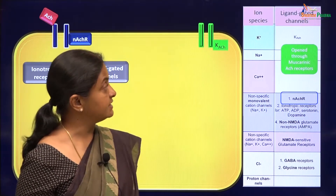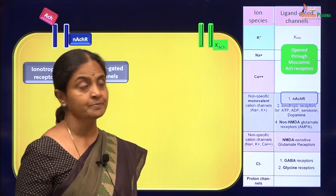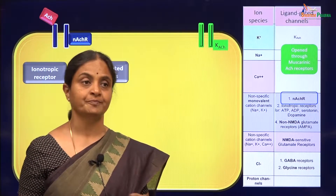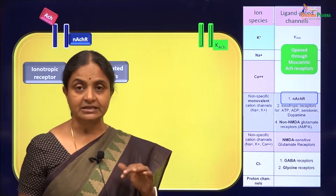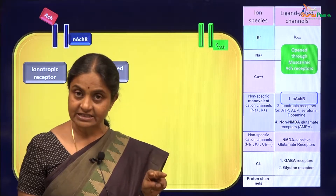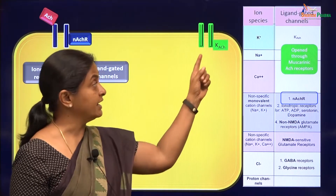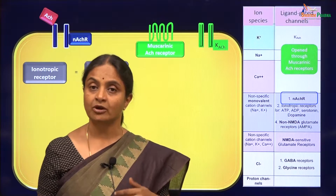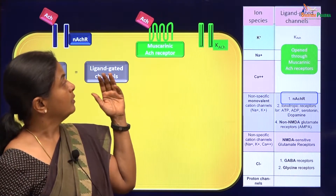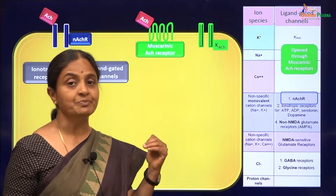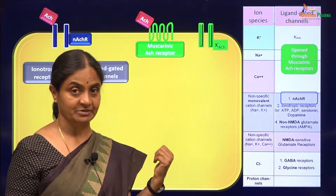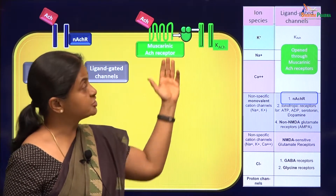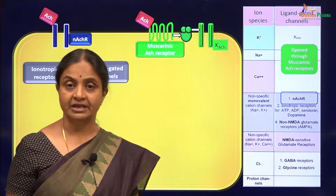Now we will look at the KACH channel. This channel is normally closed. The best location to study it is on the membrane of the pacemaker, the sinoatrial node. The pacemaker is innervated by the vagus nerve, and the vagus nerve releases acetylcholine. Acetylcholine does not directly bind to the KACH channel; instead it binds to what are called muscarinic receptors on the pacemaker cell. The muscarinic receptors are actually G-protein coupled receptors.